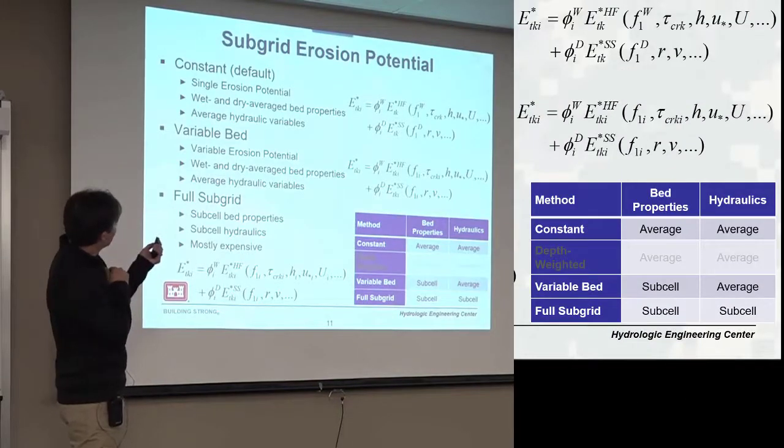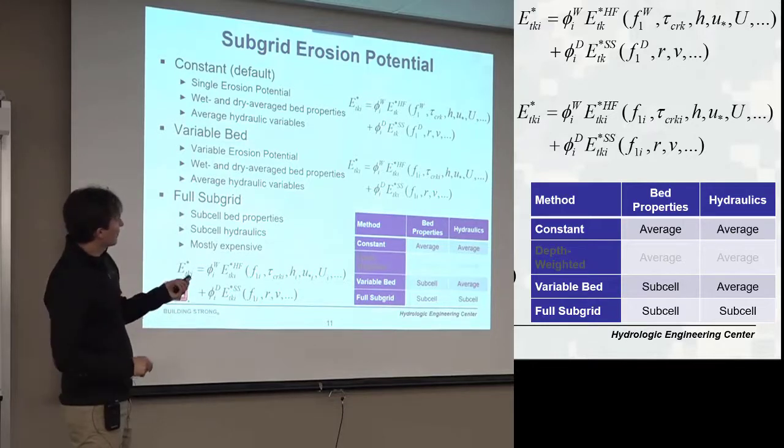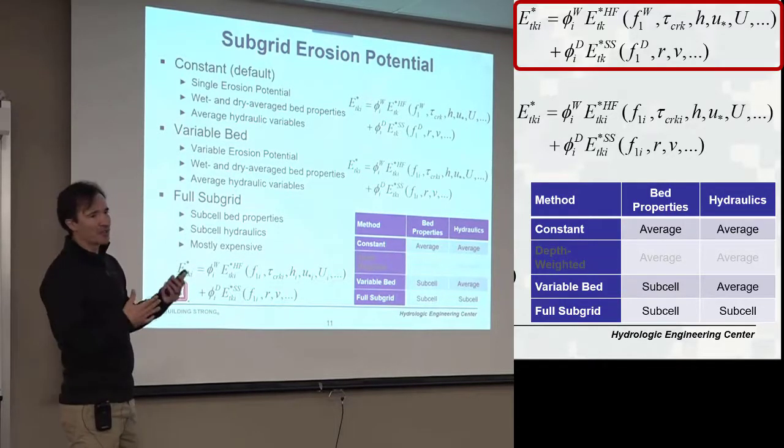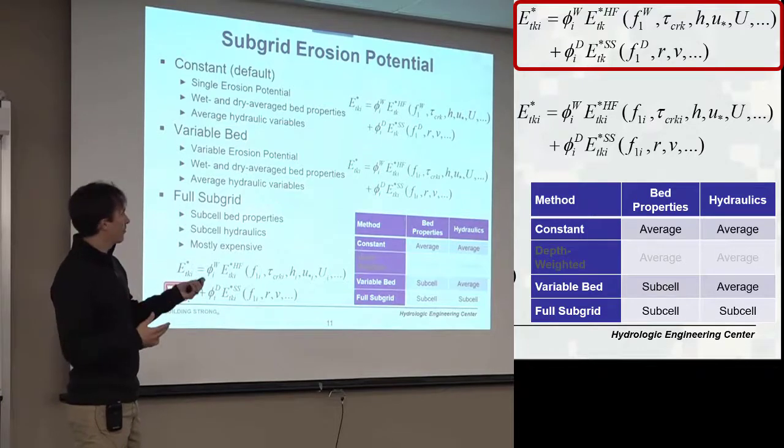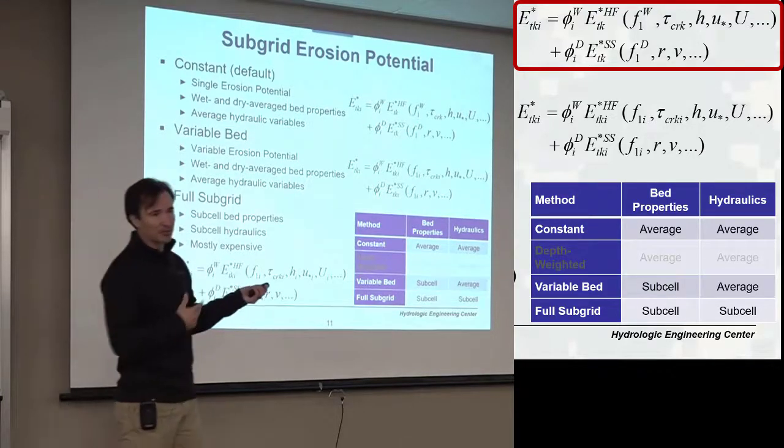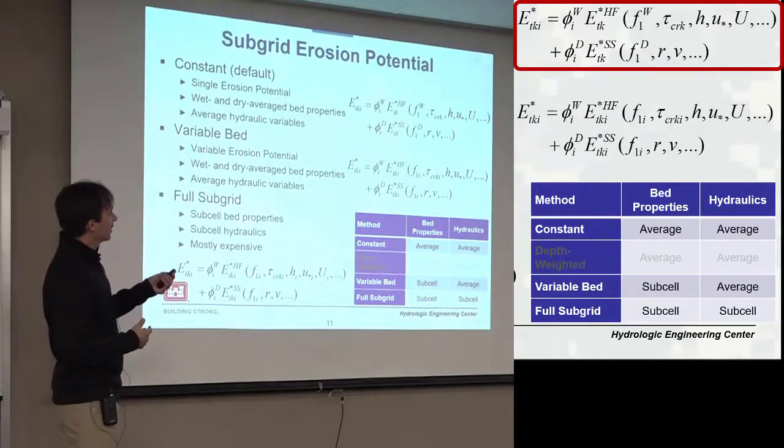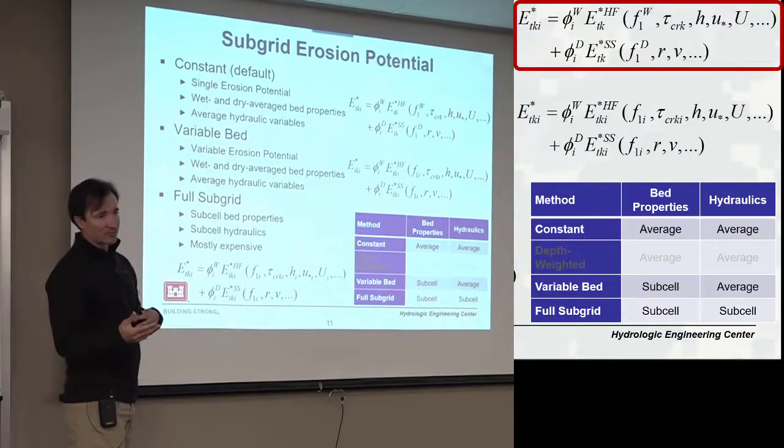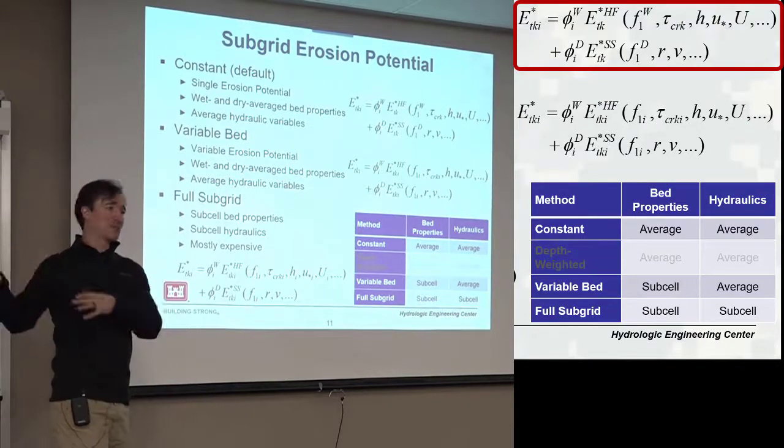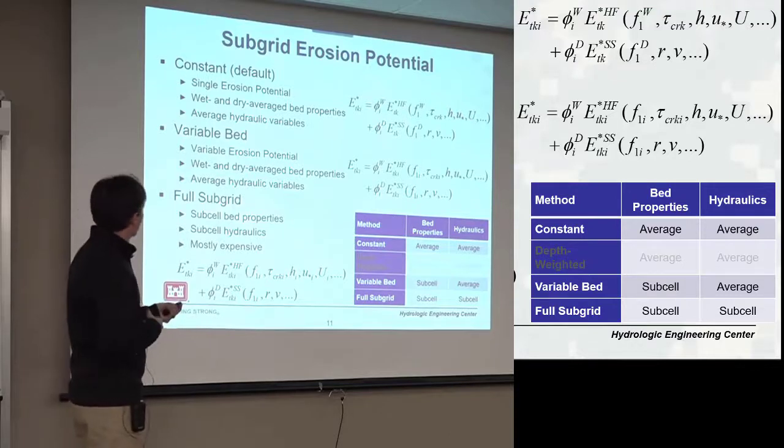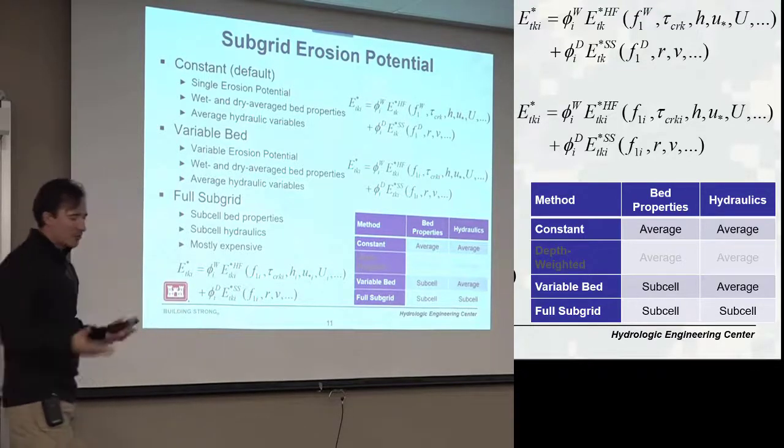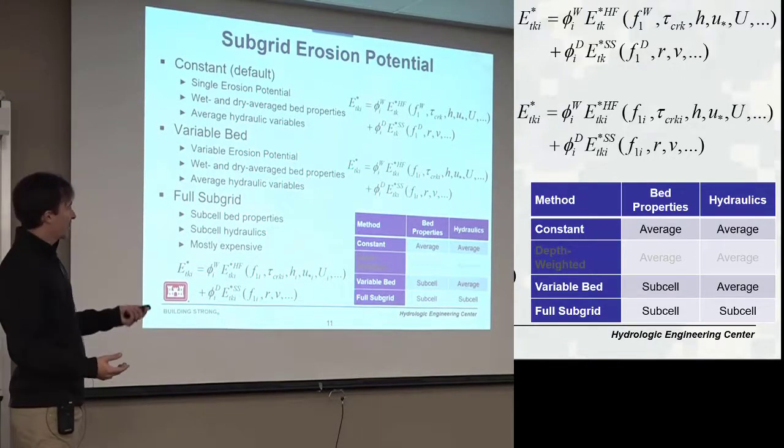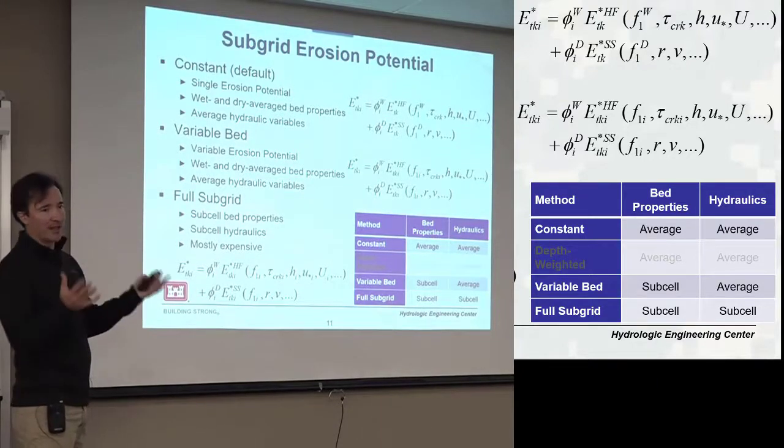If you select constant, you get a single erosion potential. And this is kind of how it's doing there. It uses an average gradation for the wet part of the cell and average hydraulic variables and critical shear stress and all that. And then you have two contributions. You have a wet part and a dry part. The dry part I mentioned yesterday that immediately goes to the wet part. And then if you select variable bed, this is the approach where you're taking into account the variable bed composition, but the hydrodynamics is still kind of cell averaged.